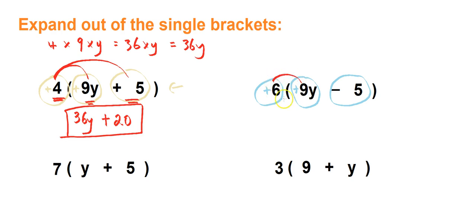So again, this time it's going to be 6 times 9y and then 6 times minus 5. So 6 times 9y is 54y, and 6 times minus 5 is minus 30.